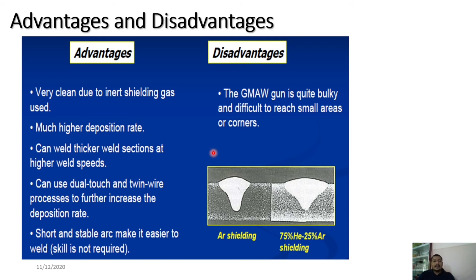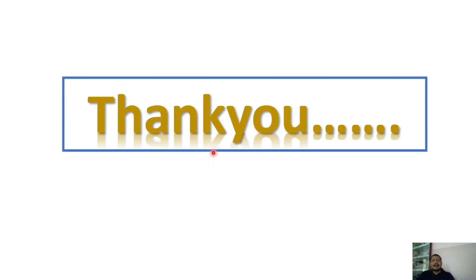Plenty of research is still ongoing on the GMAW process. As additive manufacturing becomes the future of manufacturing, GMAW and GTAW processes — when carefully controlled — can be used for Wire Arc Additive Manufacturing (WAAM). WAAM processes normally employ GMAW or GTAW welding torches for additive manufacturing purposes. With that, lecture number 25 on GMAW process is concluded.